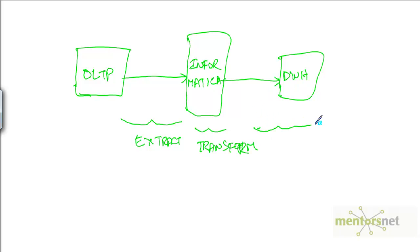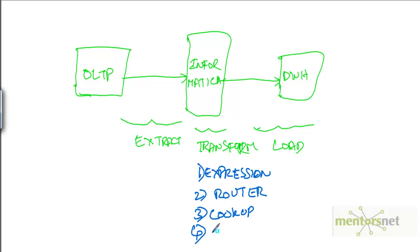Informatica will do the Transform step, and this will do the Load step to load into the target. Informatica provides a lot of transformations like Expression, Router, Lookup, Aggregator, etc. Using these transformations we can transform the data in a lot of ways from source to target, from OLTP system to data warehouse.